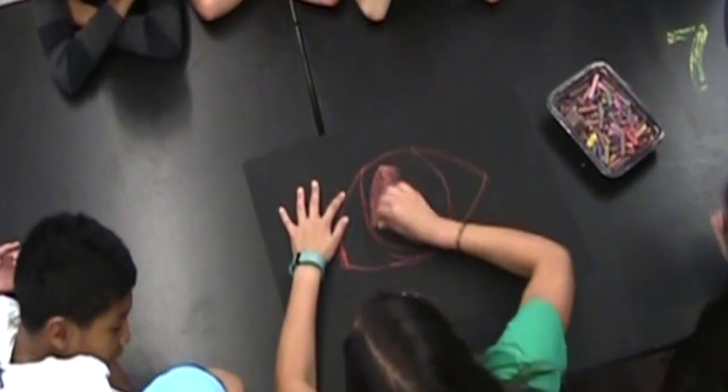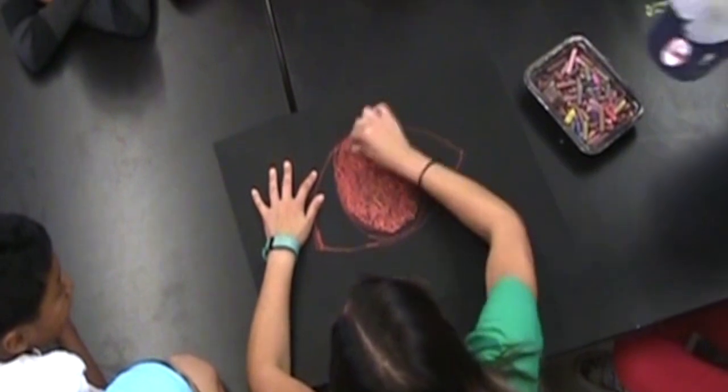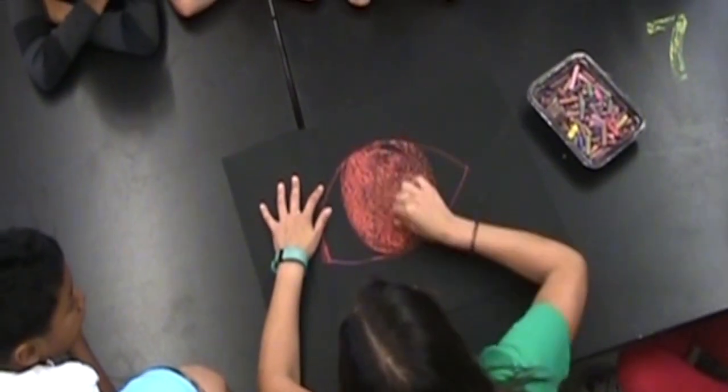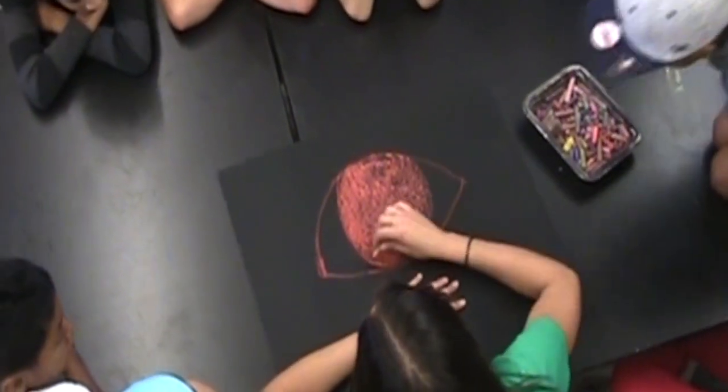Then we're going to take a base color and I'm using the side of my oil pastel and you're going to color in that whole area. We're actually going to be building up different layers using the oil pastels.